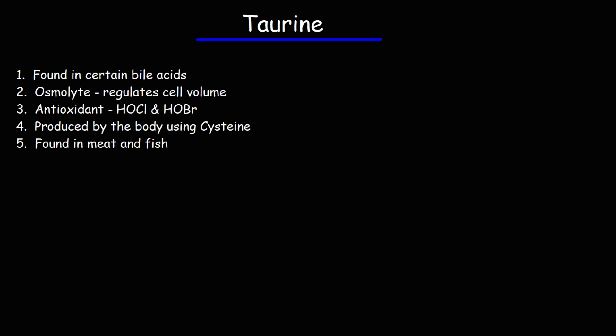Now the body can make taurine. Taurine can be produced from the amino acid cysteine, and it's hard to be deficient in this particular molecule because not only can your body make it, but it's found in foods such as meat and fish. So if you're consuming a variety of foods, it's hard to be deficient in this molecule.